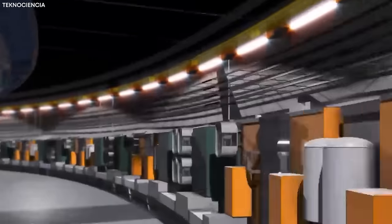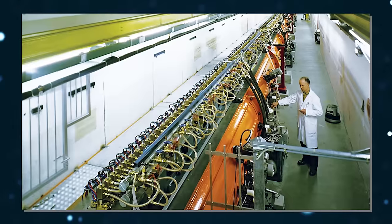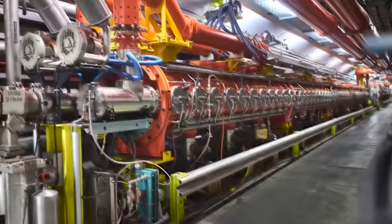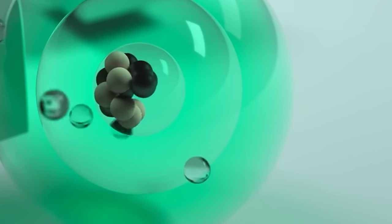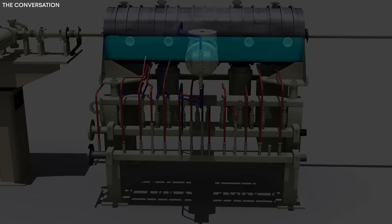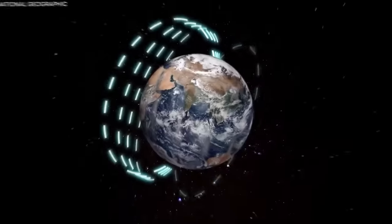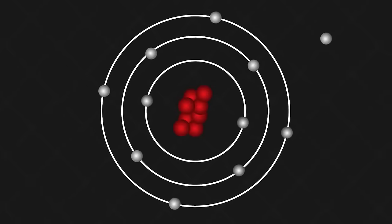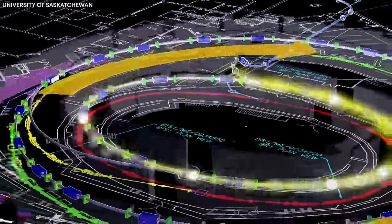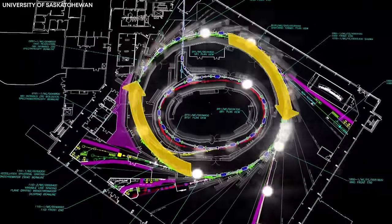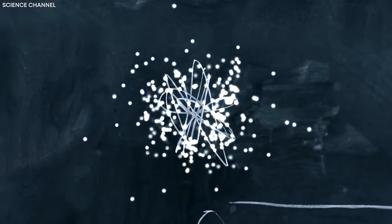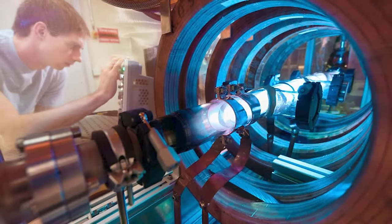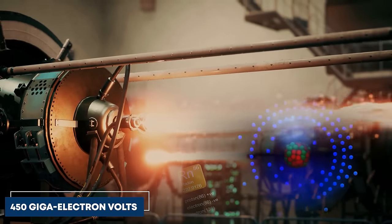Intriguingly, the LHC's particle acceleration process begins with something quite simple, a bottle of hydrogen gas. This gas is ionized to produce protons, which are then injected into a linear accelerator named LINAC2. Here, in the accelerator's radio frequency cavities, the protons gain their first jolt of energy, catapulting them to 50 mega-electron volts. The newly energized protons then make their way to the proton-synchrotron booster. Through a combination of more radio frequency pulses and precisely directed magnetic fields to corral the particle beam, the booster accelerates the protons to 1.4 gigaelectron volts. Now packing some serious energy, the protons are injected into the proton-synchrotron, which accelerates them to 25 gigaelectron volts.